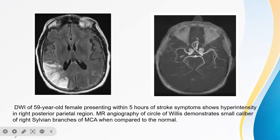This is a DWI of a 59-year-old female presenting within 5 hours of stroke symptoms showing an abrupt cutoff of the left middle cerebral artery, with hyperintensity in the right posterior parietal region. The MR angiography of the circle of Willis demonstrates small calibre of the right sylvian branches of MCA compared to normal.